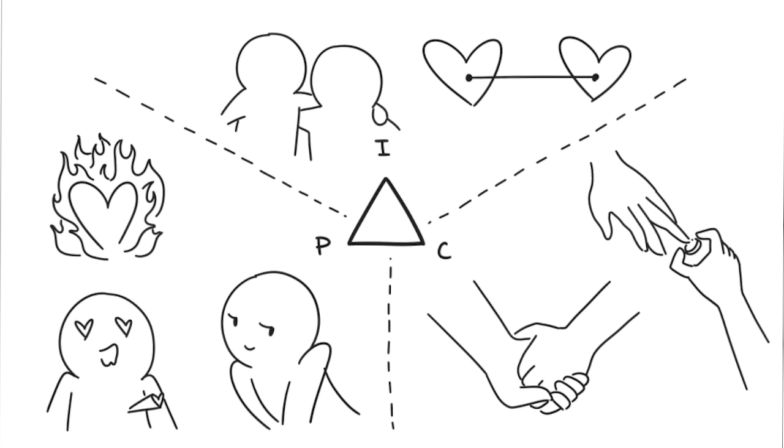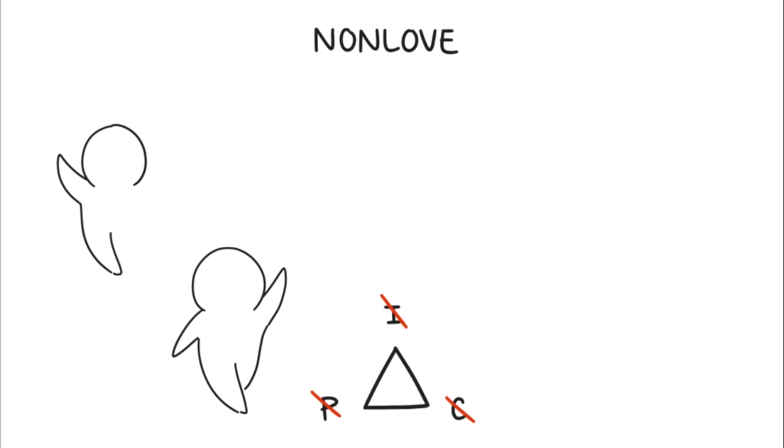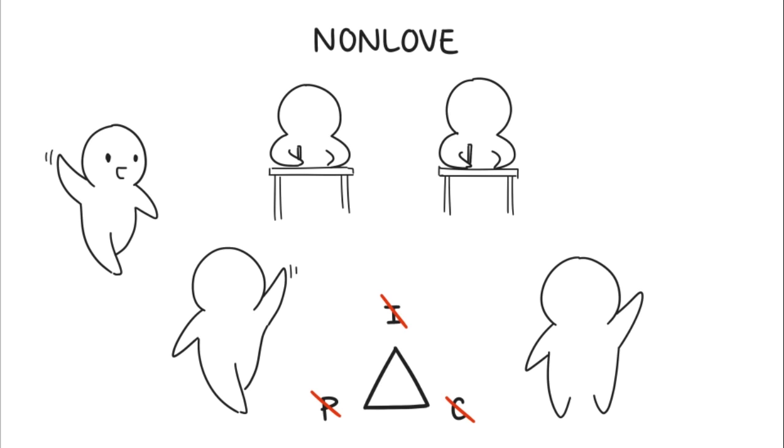According to Sternberg's theory of love, there are six forms of love, which are combinations of the three components previously described. Non-love is merely the absence of all three components. This basically characterizes the majority of our personal relationships, which consists of simple, casual interactions. It could apply to your acquaintances or people you're not particularly attached to.